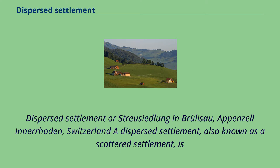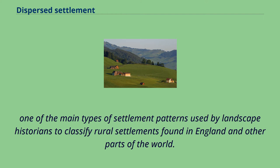Dispersed Settlement, or Streusiedlung, in Brulesau, Appenzell in Aroden, Switzerland. A dispersed settlement, also known as a scattered settlement, is one of the main types of settlement patterns used by landscape historians to classify rural settlements found in England and other parts of the world.